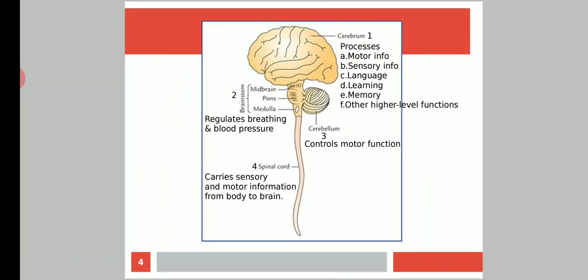The cerebrum processes motor information for body movement, sensory information from all our sense organs, language, learning, memory, and various other higher-level functions. The brain stem regulates breathing and blood pressure. The cerebellum controls specifically the motor function of our body. The spinal cord carries sensory and motor information from body to brain—basically it is a carrier, like the railway service.